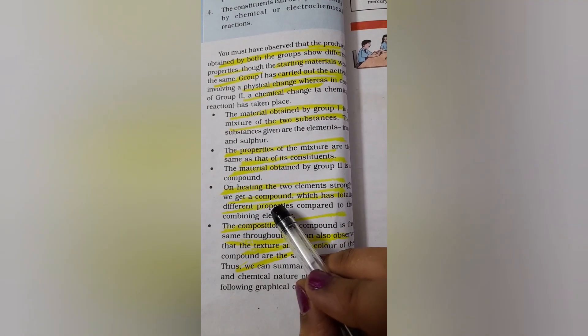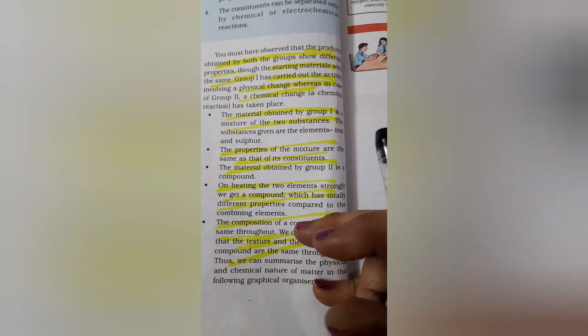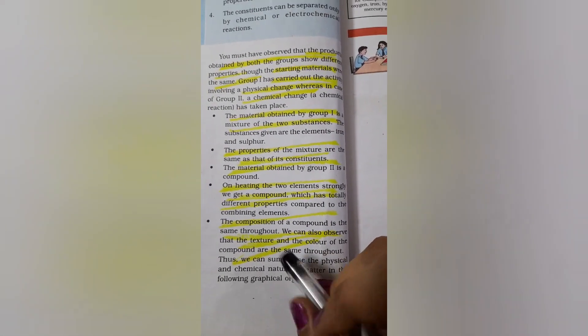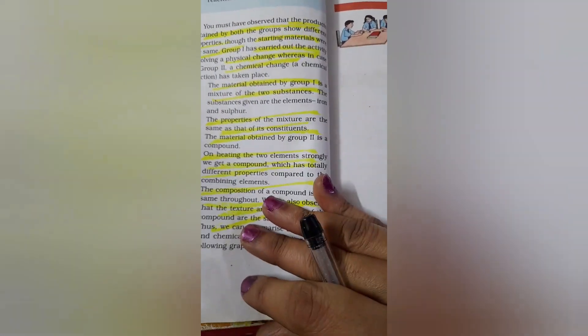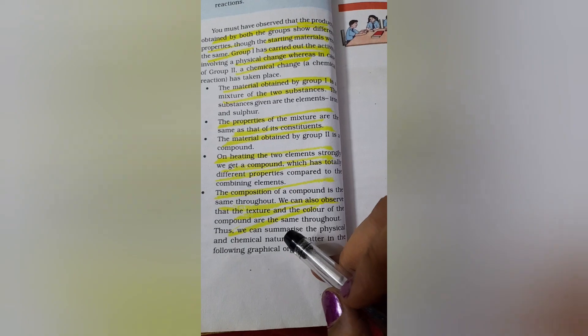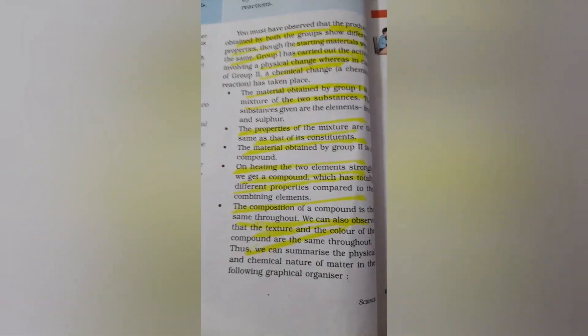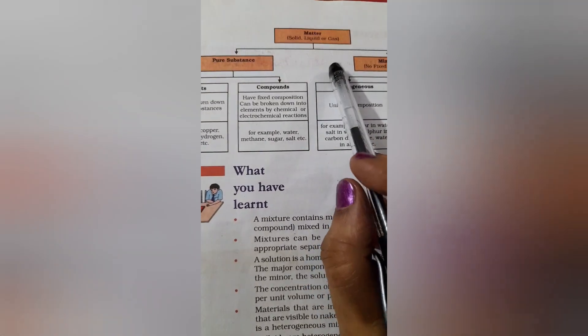The material obtained by group 2 is a compound. When you heat the 2 elements strongly we get a compound. The property of the newly formed substance is entirely different and the composition is also the same throughout. All these properties involve the chemical nature of the substance. The texture and color are all same throughout.